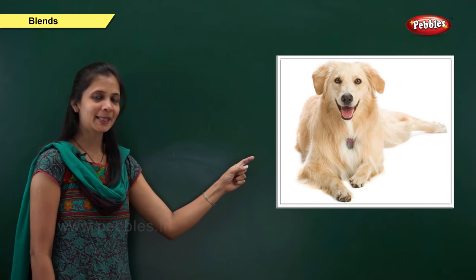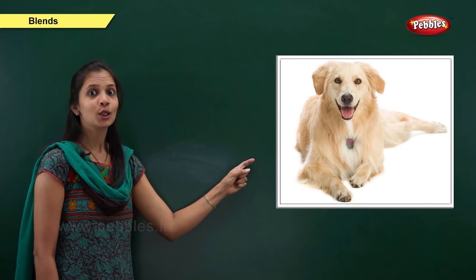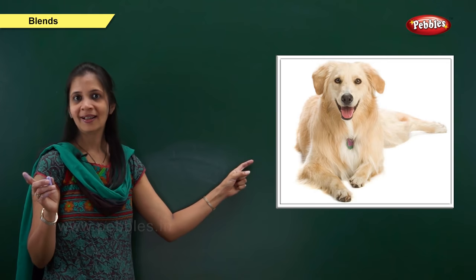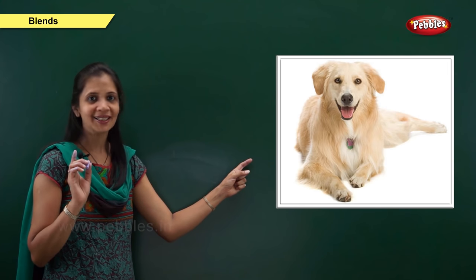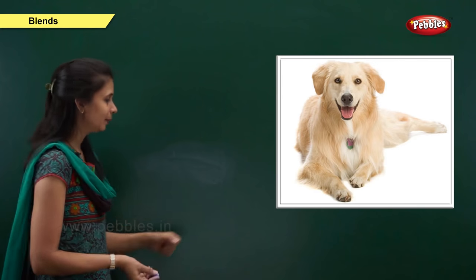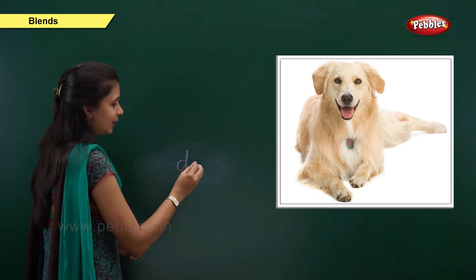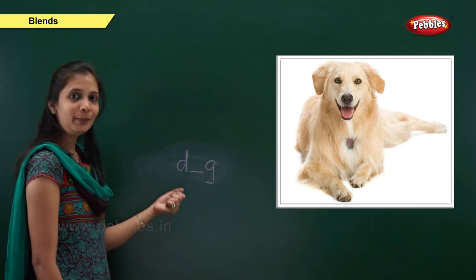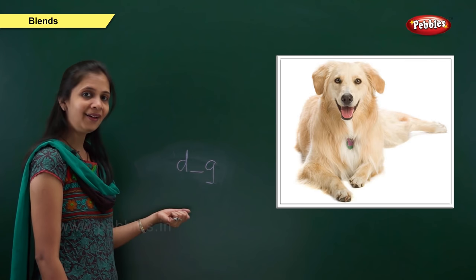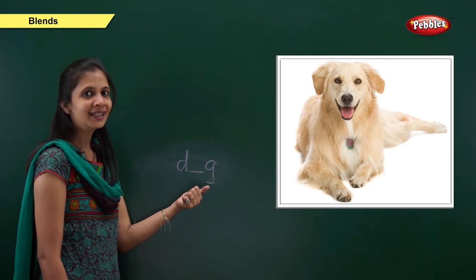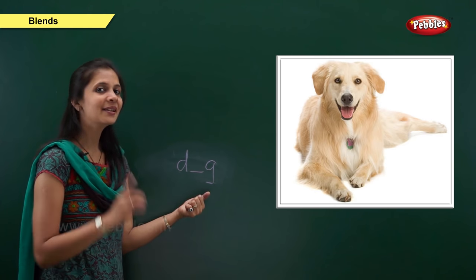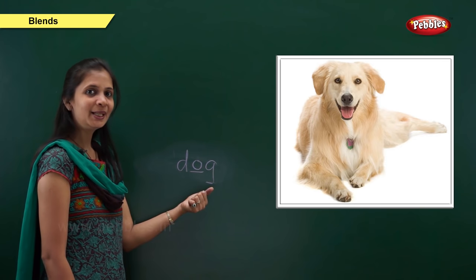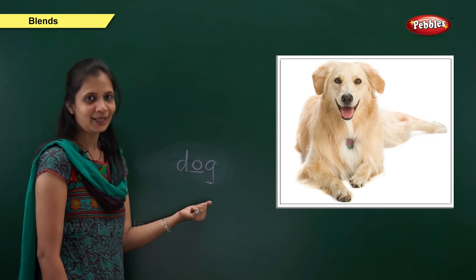Next one. Which picture is this? Yes, it is dog. The sound of dog is d, o, g. When the sound is 'd', the letter is d. Ending sound is 'g', the letter is g. What about the middle sound? The vowel is o. So: d, o, g — dog.